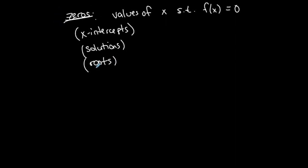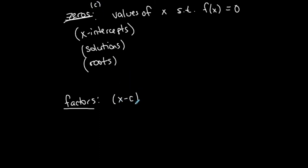The zeros of a polynomial function correspond to its factors. If a zero is positive two, then the factor is x minus two. In general, if c is a zero, then x minus c is a factor — called a linear factor. So we can go back and forth between the zeros and the factors of a polynomial function.